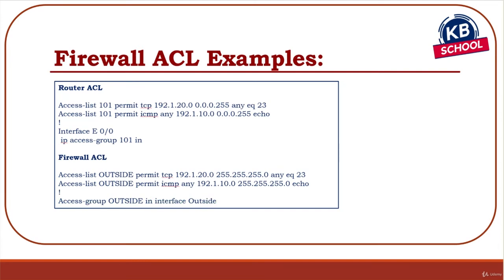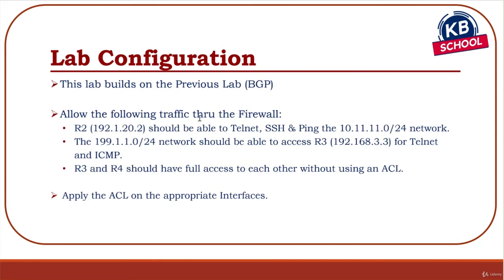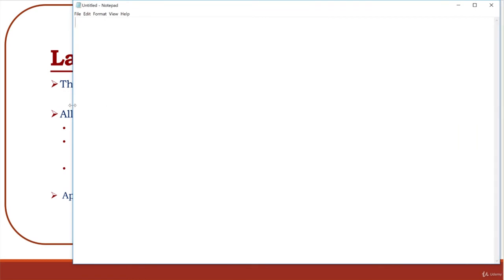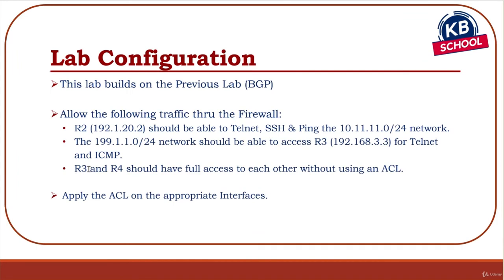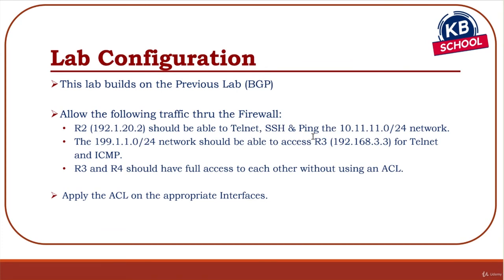Now let's implement this in a lab environment, building on the previous BGP lab with routing configured. The requirements are: host R2 (192.1.20.2) should be able to telnet, SSH, and ping the 10.11.11.0 network; the 199.110 network should access R3 (192.168.3.3) for telnet and ICMP; and R3 and R4 should have full access to each other without any ACL, using the same-security-traffic command since they're set to security level 50.